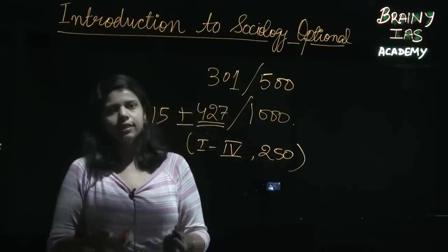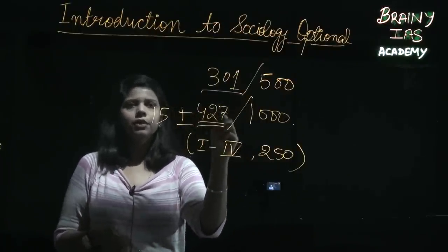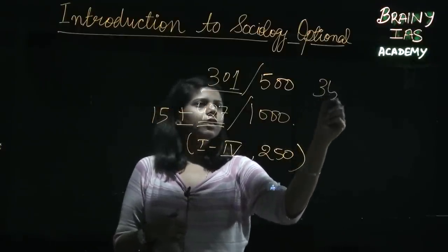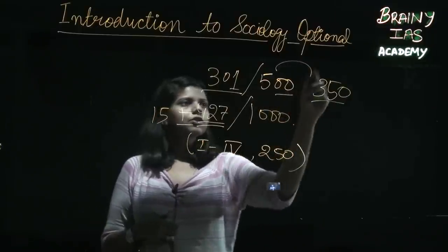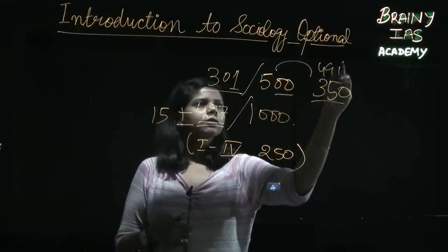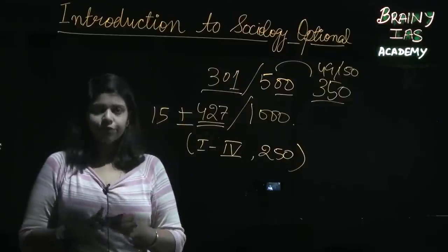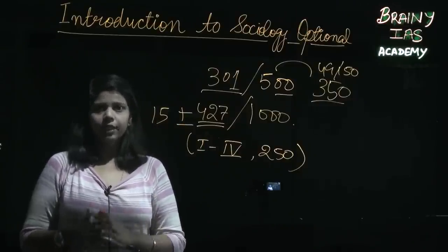But in case of optional, you can score as high as even 350 out of 500. That's like a straight 49-50 marks jump. And mind you, a 50 marks leap in the UPSC exam is like a deal breaker or deal maker.